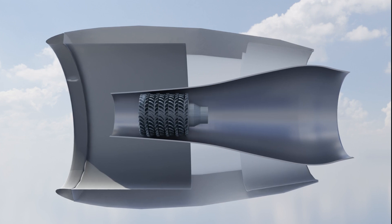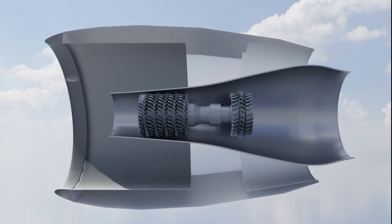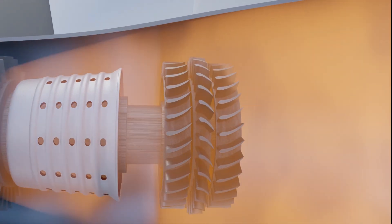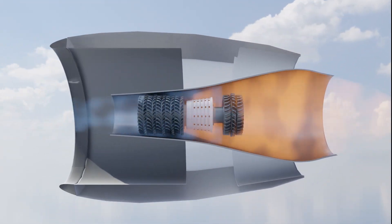The compressor receives the energy to rotate from the turbines placed right after the combustion chamber. The turbine and the compressor are connected to the same shaft which will make them rotate at the same speed when the hot air leaves the combustion chamber.